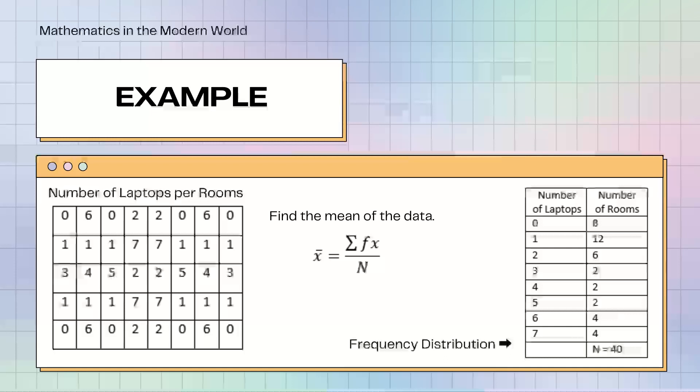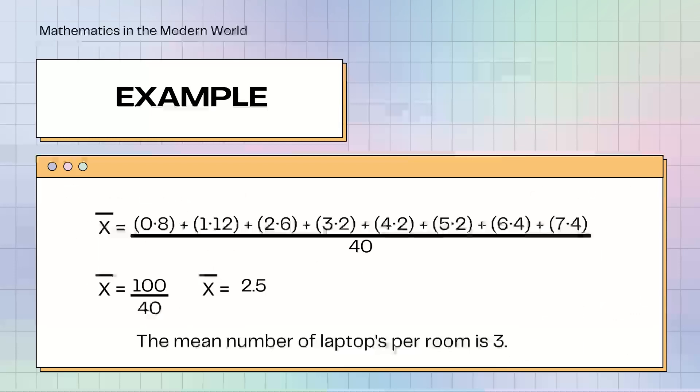For example, our research was about gadgets, specifically laptops, and nagpa-survey kami per room kung ilan yung laptops na dala ng college students. First, we're going to find the mean of the data. Para makuha natin yan, we need to use frequency distribution para ma-present natin yung data into table. The number of laptops is the first column, while the second column is the number of rooms. Ibig sabihin, out of 40, mayroong walong rooms na walang laptops. Out of 40, mayroong 12 rooms na may isang laptops. Out of 40, may anim na rooms na dalawa yung laptops.